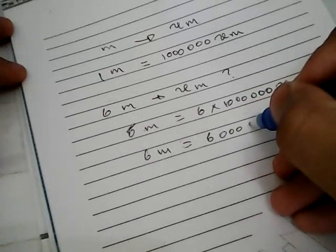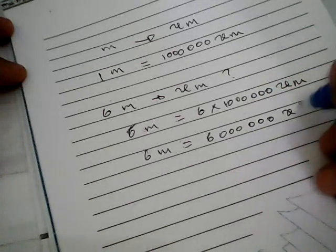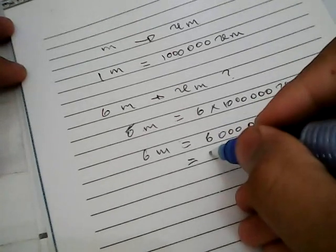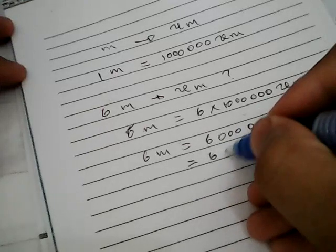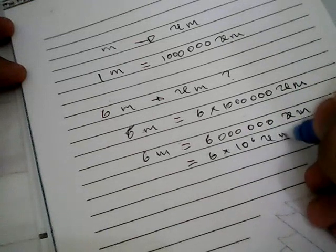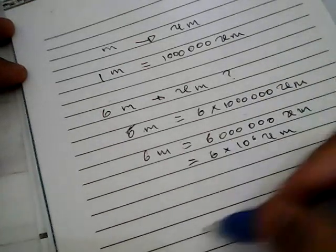All right, the results of this equation is six meter is equals to six million micrometer, or another way you can use this instead: six multiply with 10 power six micrometer.